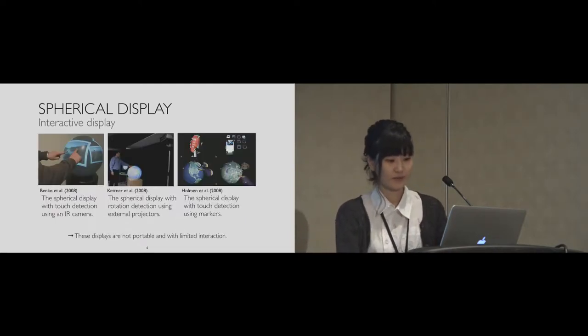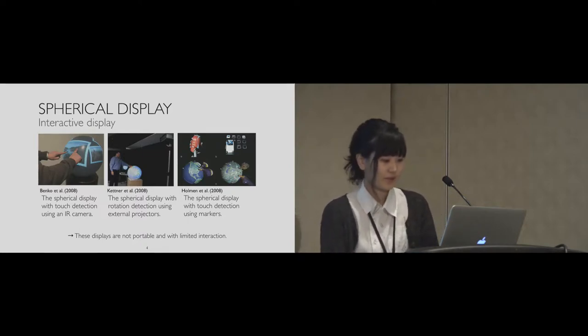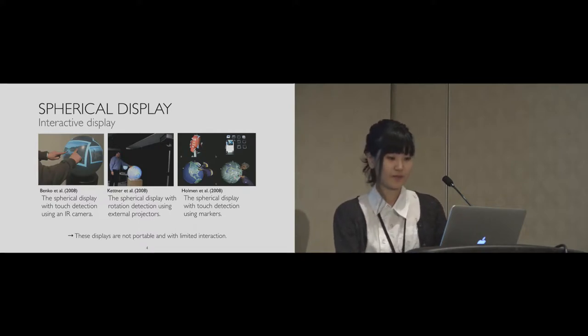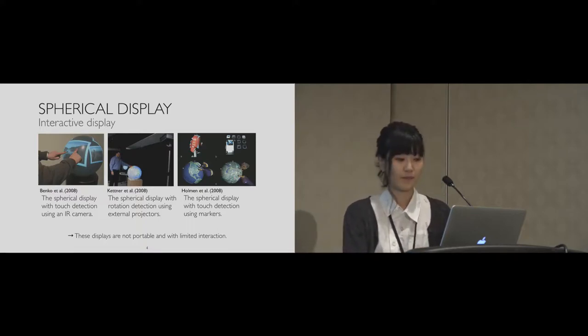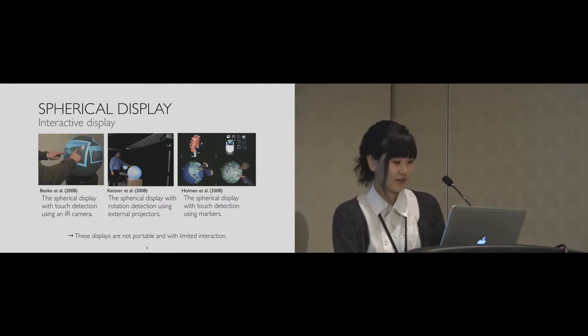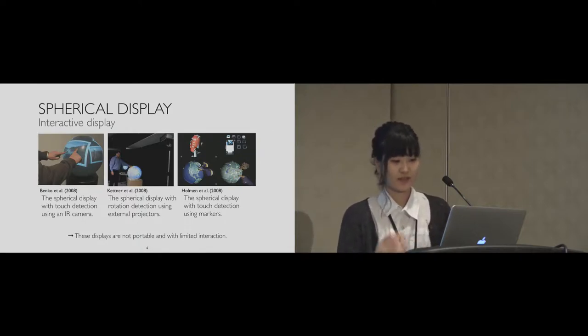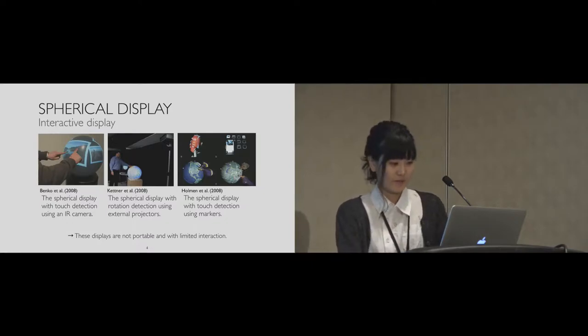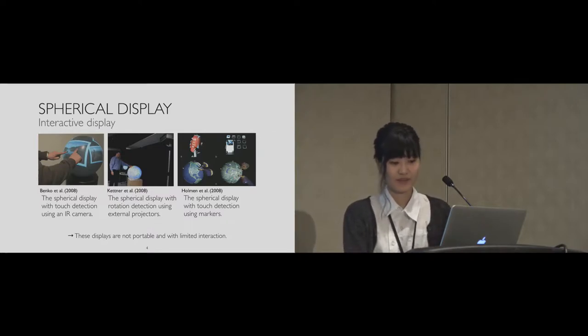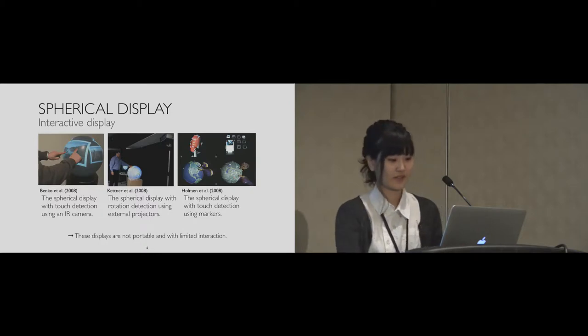This research has proposed interactive spherical displays. A projector is under the sphere to project images on the surface of the spherical display, and also an IR camera is under the display to detect precise touch position. Ketner et al. proposed a spherical display by utilizing projectors set outside of the display. This display uses rotation of itself as an input function where it can detect touch. Holman et al. showed an example to display a globe on the surface of a sphere. All these displays are interactive, but didn't utilize the feature of a sphere so much and limited the interaction that they use.